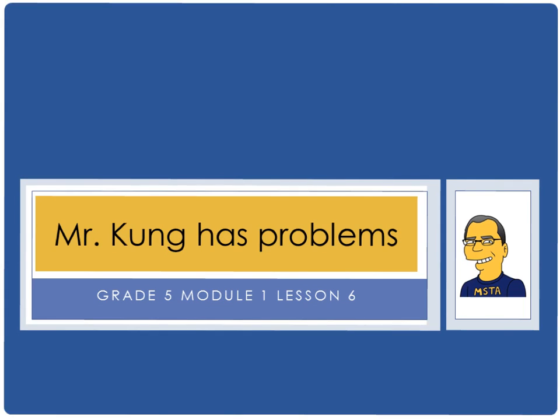Hello, and welcome to another episode of Mr. Kung Has Problems. Tonight, in grade 5, we are working on Module 1, Lesson 6. And tonight, we will be comparing decimal fractions to the thousandth place using like units and express comparisons with greater than, less than, or equals to.